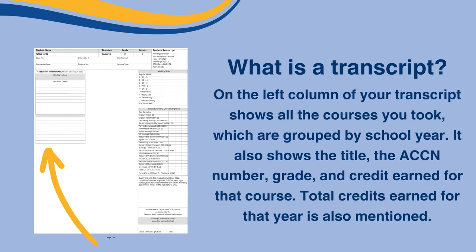On the left column of your transcript are all the courses you took, which are grouped by school year. It also shows the title, the ACCN number, grade, and credit earned for that course. The total credits earned for that year is also mentioned.